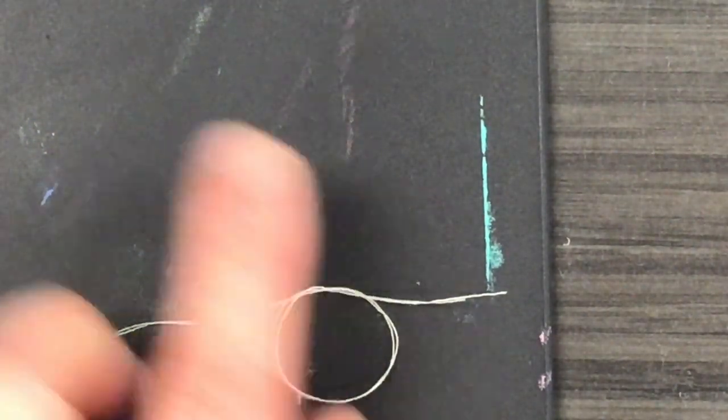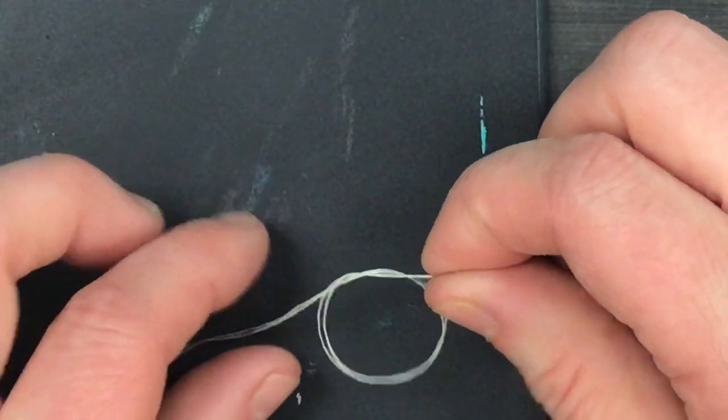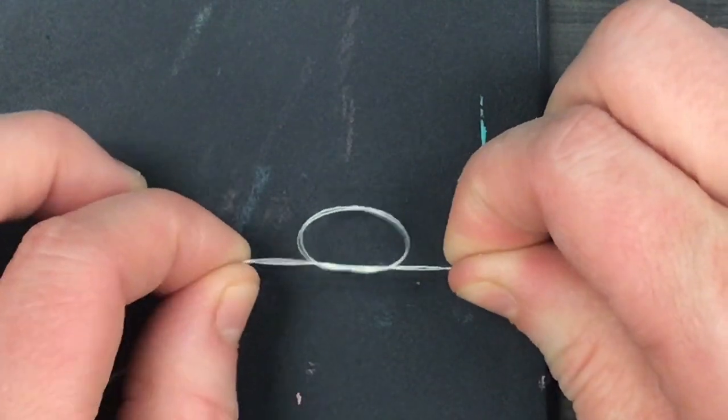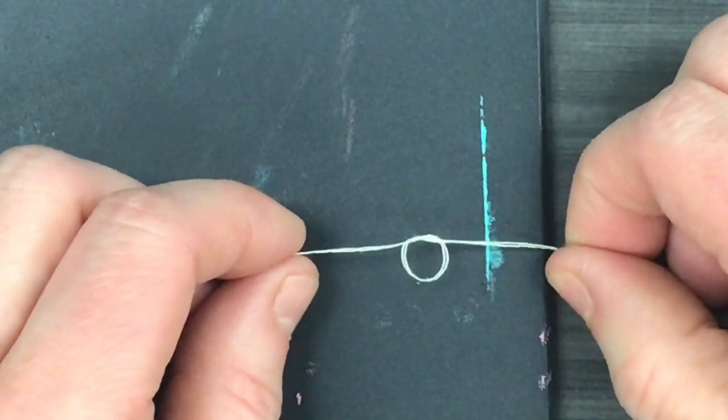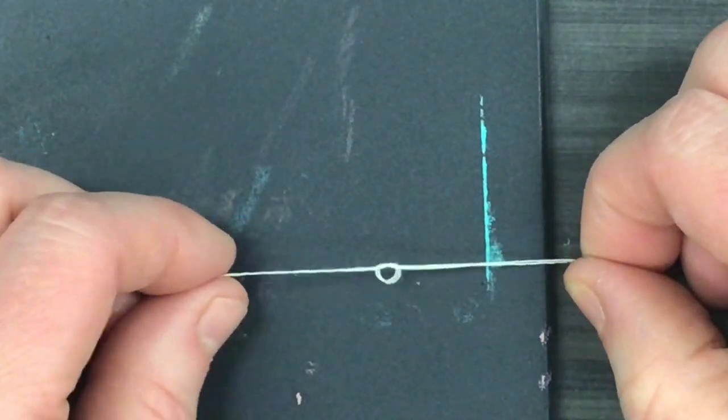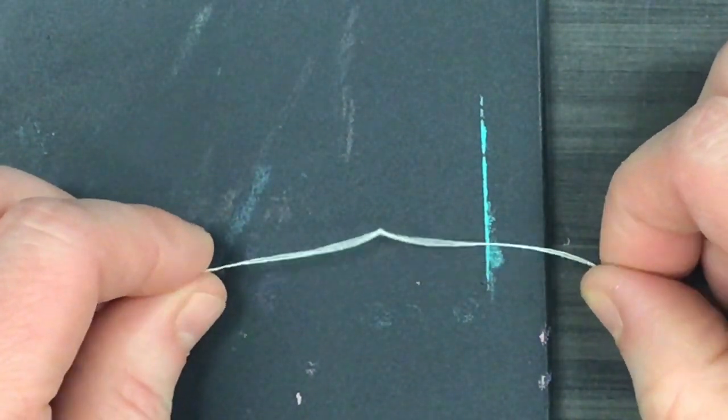It will look kind of like a circle now, and if I grab my ends and I grab the end that's attached to my needle, I can pull and that circle gets smaller and smaller until it turns into a knot.